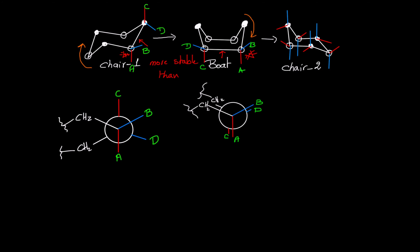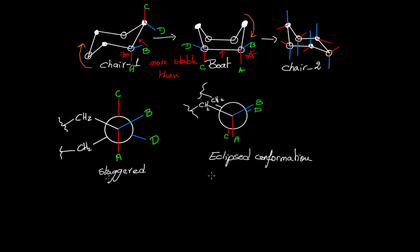What I can see from here is that in a chair conformation I have staggered conformations between all carbon-carbon bonds. However, in a boat conformation, for the down carbons, I have eclipsed conformations. Therefore, boat conformation is more energetic due to two strains: the first is due to the eclipsed conformation, and the main strain in the eclipsed conformation is the torsional strain.